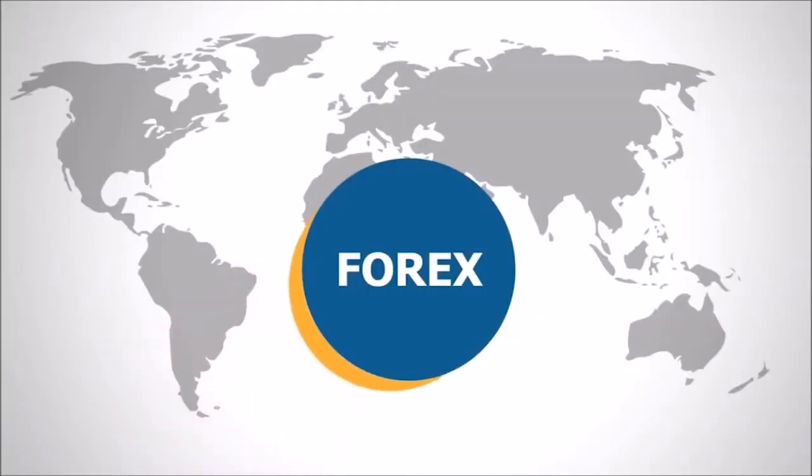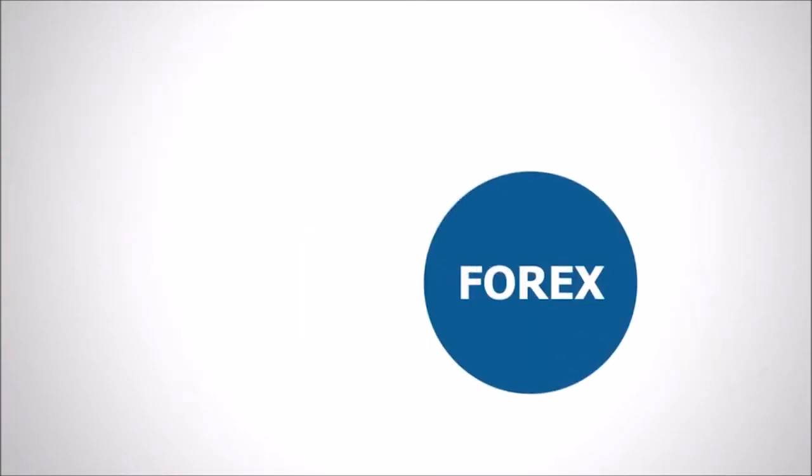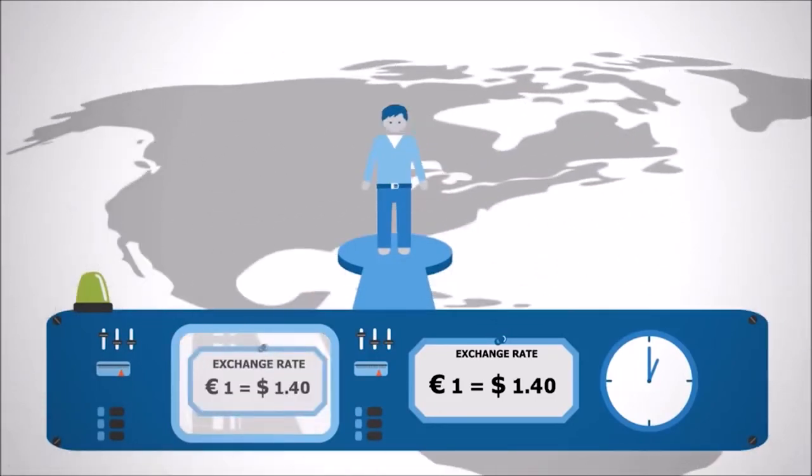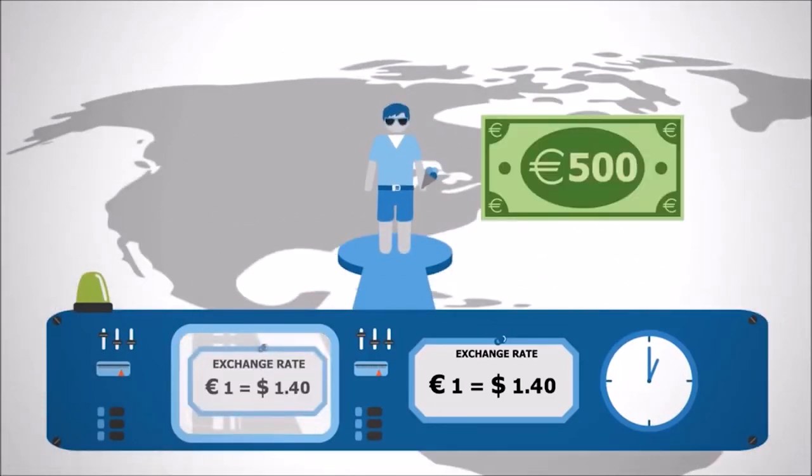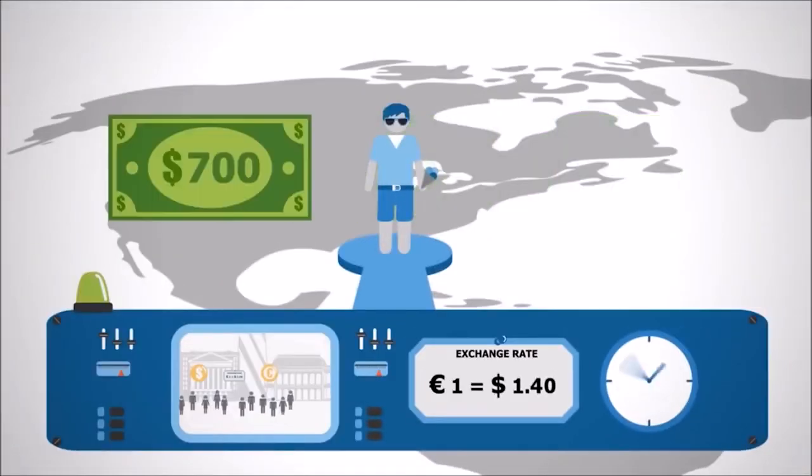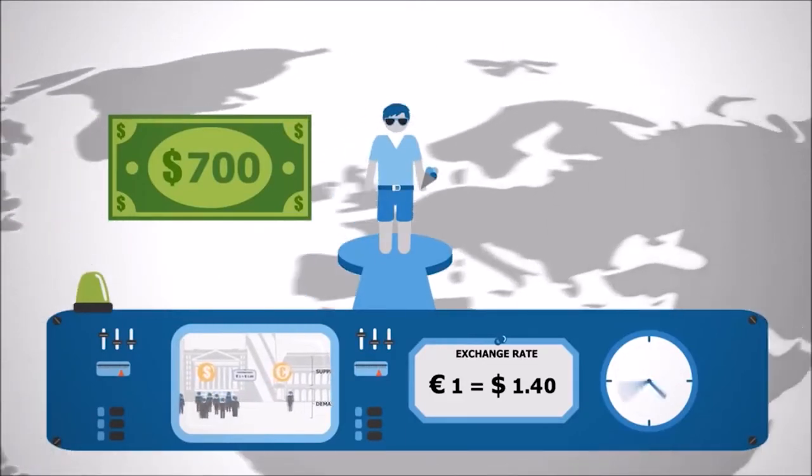Let's use an everyday example to explain how you can actually profit from this. Say you live in Europe and went on holiday to the United States. Let's say that you changed your 500 euros into US dollars at the rate of 1.4 dollars for every euro. You got 700 US dollars, but you do not spend any money at all, so you still have 700 dollars after you come back.